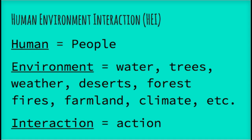When learning about HEI, vocabulary is really important. The first thing is the human — obviously that's going to be people, citizens in the world. The environment is the water, trees, weather, deserts, forests, forest fires, farmland, the climate — anything that has to do with nature. And interaction is the action between them.